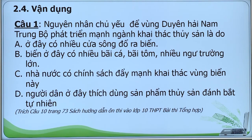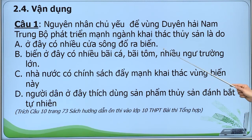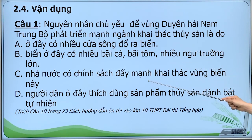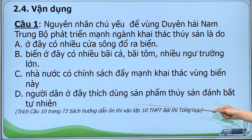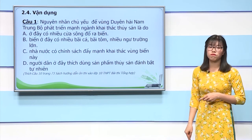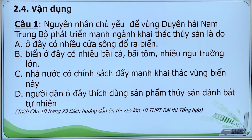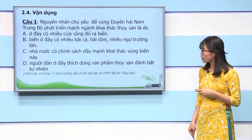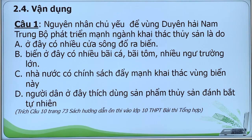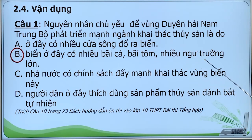Câu 1: Nguyên nhân chủ yếu để vùng Duyên Hải Nam Trung Bộ phát triển mạnh ngành khai thác thủy sản là do: A. Ở đây có nhiều cửa sông đổ ra biển; B. Biển ở đây có nhiều bãi cá, bãi tôm, nhiều ngư trường lớn; C. Nhà nước có nhiều chính sách đẩy mạnh khai thác vùng biển này; D. Người dân ở đây thích dùng sản phẩm thủy sản đánh bắt tự nhiên. Qua phần kiến thức về ngành thủy sản, điều kiện thuận lợi để phát triển đối với ngành khai thác là có nhiều bãi cá, bãi tôm và nhiều ngư trường lớn. Đáp án B.